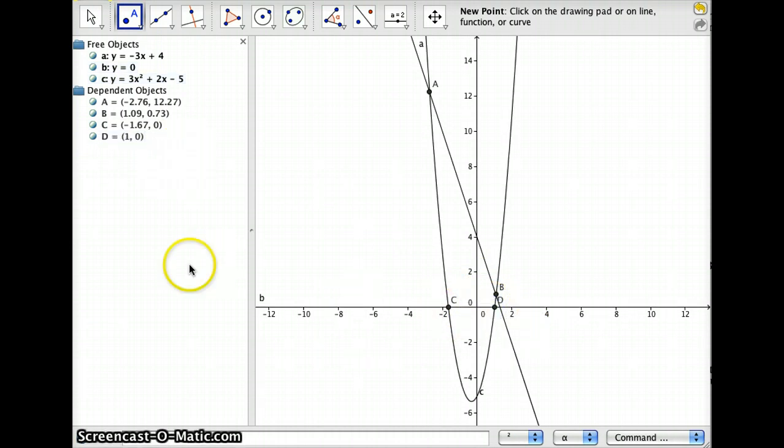And now you can see that for that parabola, the two x-intercepts are at point C, which is negative 1.67 comma 0, and at point D, which is at 1 comma 0.